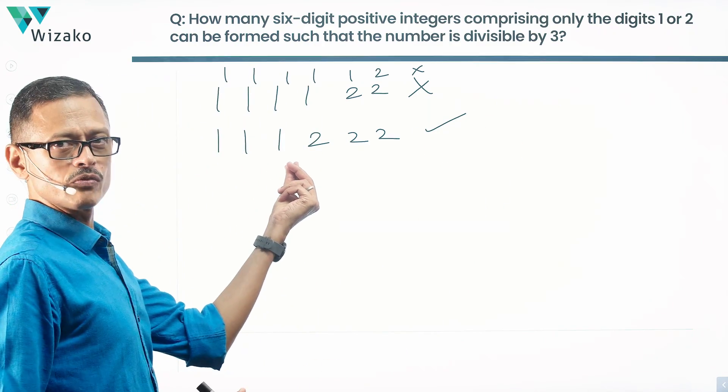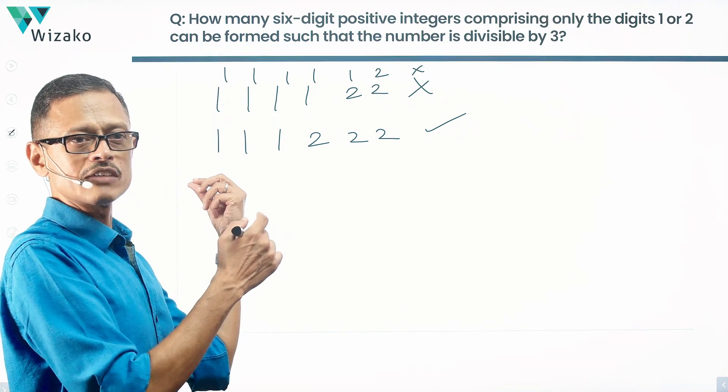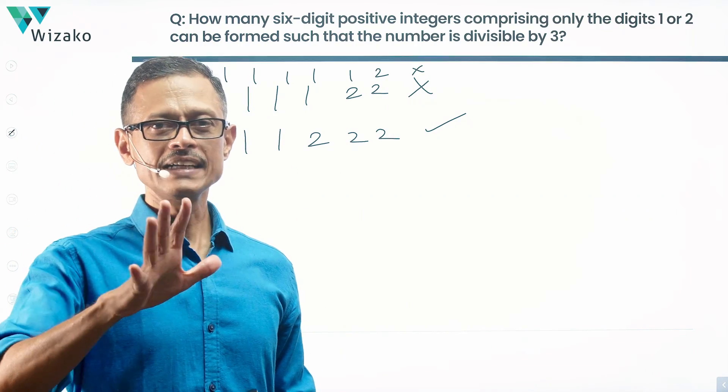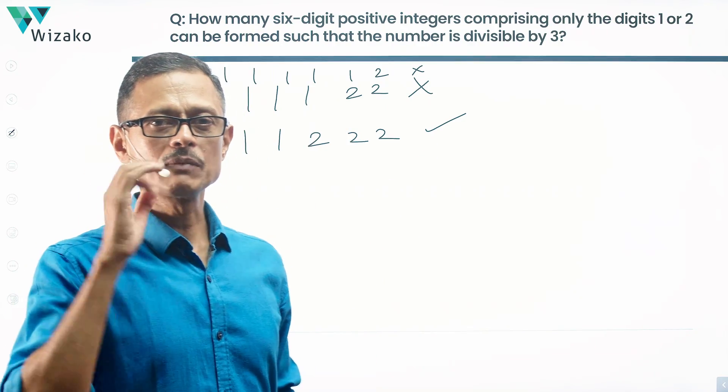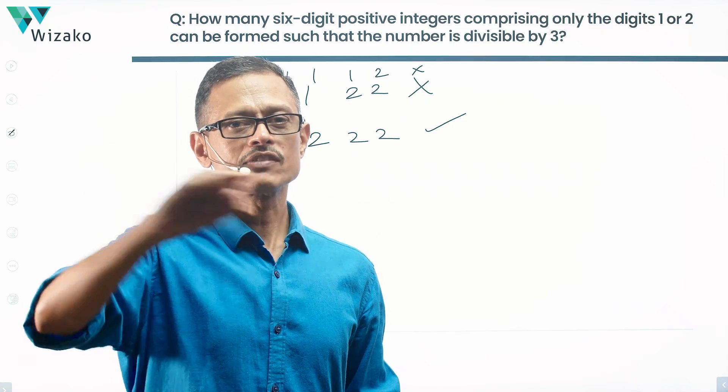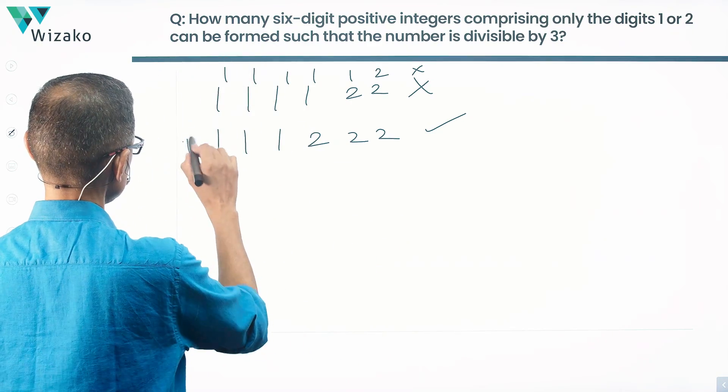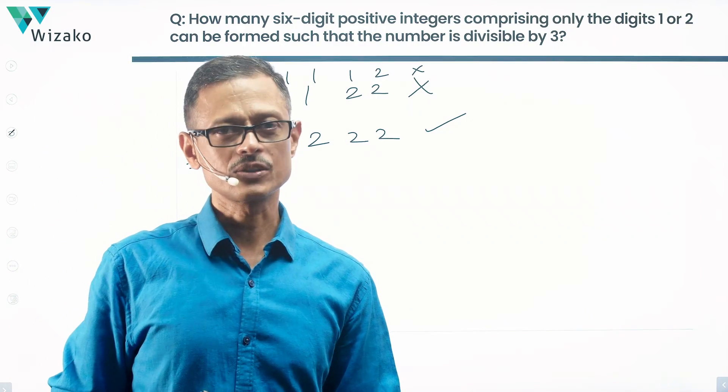If I make 1 more as 2, I'm adding 1, not enough. 1 more as 2, not enough. Make all of them as 2s, it'll work. So the possibilities of numbers, forgetting the rearrangements, they'll be divisible by 3 using 1s and 2s will be when all of them are 1s, all of them are 2s, or the third possibility is 3 of these digits are 1s and 3 of these digits are 2s.